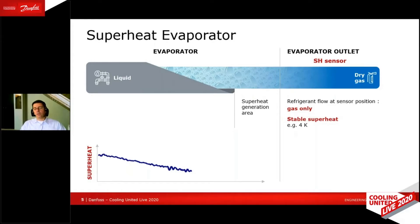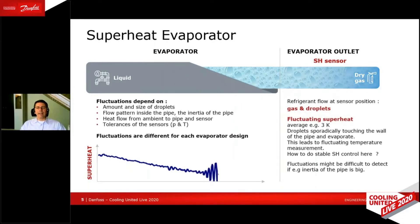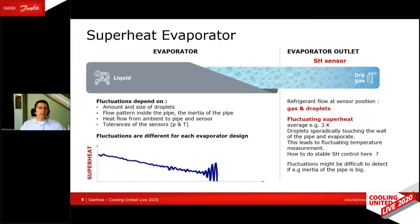Let's go and reduce the superheat even further. Now, the refrigerant leaving the evaporator is a mixture of gas and some droplets. What happens now is that the droplets hit the wall of the pipe leaving the evaporator and evaporate there. And that gives instabilities in superheat measurement. So the superheat measurement goes up and down whenever a droplet hits there and evaporates. And that's the point where we should stop reducing the superheat, because now we are unstable — droplets leaving the evaporator — and we should increase a little bit again to come back to a stable superheat.